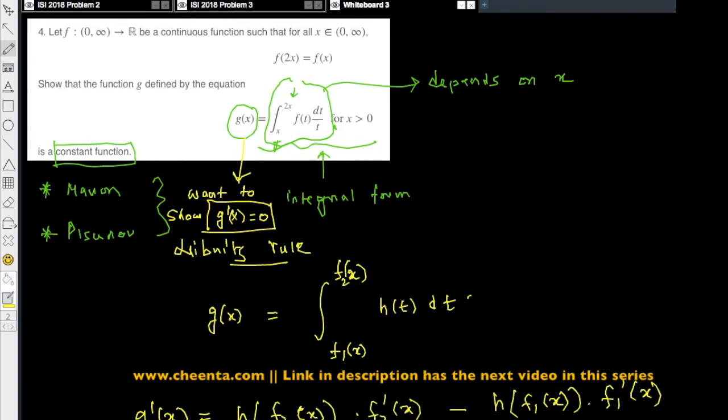If derivative is zero then the function is not changing. So let's take the derivative of this function using the Leibniz rule. So g prime x is equal to f of 2x by 2x. Remember, I'm replacing every t by the upper limit function. So the upper limit function here is 2x, so I'm replacing t by 2x and taking the derivative of 2x.